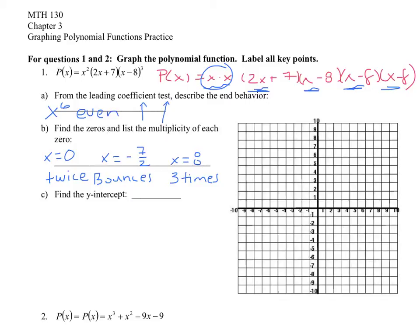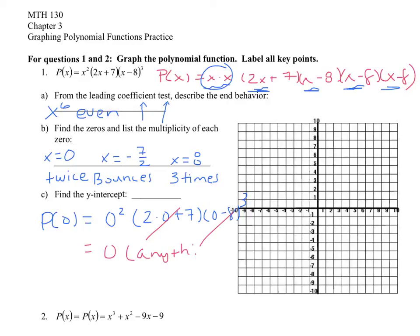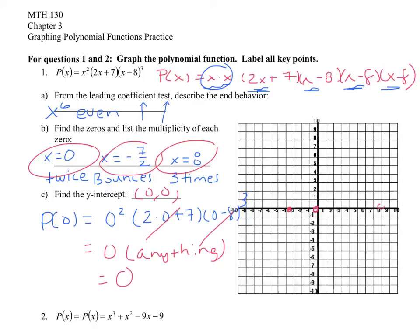Find the Y intercept — that's P of 0. You evaluate the function at zero, plugging zero in for all the X's. I get zero squared times (2 times 0 plus 7) times (0 minus 8) cubed. But when I multiply by zero, zero times anything is zero, so the answer is just zero. That's also obvious from the zero we found — X equals zero is both a zero and the Y intercept. So I plot the intercepts: negative 3.5, zero, and eight, then sketch the end behavior — it rises and rises on both ends.